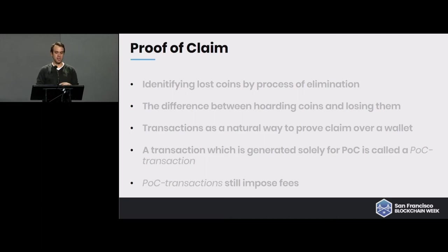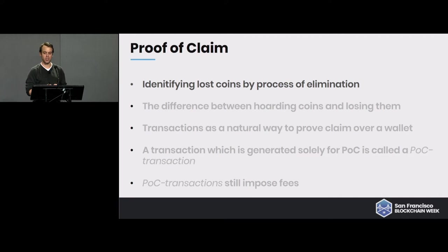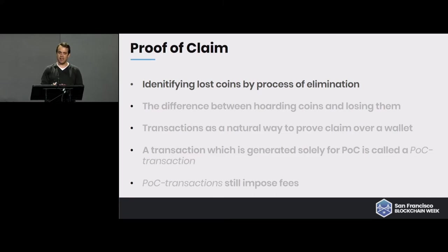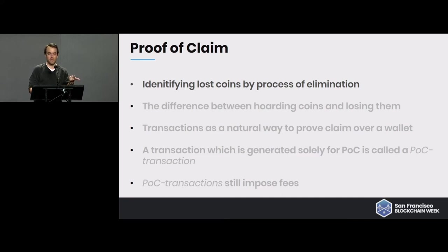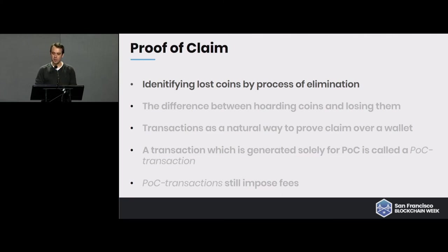With the framework established, I want to discuss proof of claim. Proof of claim is the way we identify lost coins via process of elimination. Identifying lost coins is problematic: if we accept someone's claim of 'I lost this wallet' we introduce two problems — how do we know they actually owned it, and how do we know they actually lost the key versus lying to get redistribution money? The only approach is to go at it from the other direction: instead of proving coins are lost, prove which coins are still in circulation. That is the concept of proof of claim.